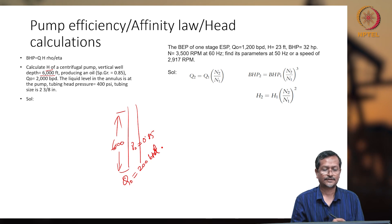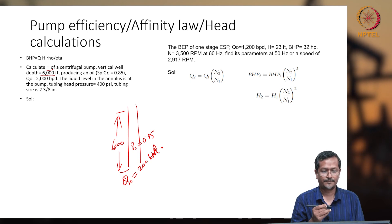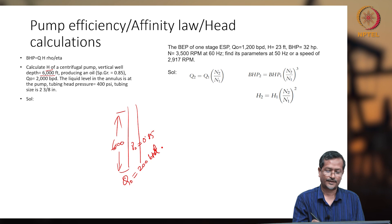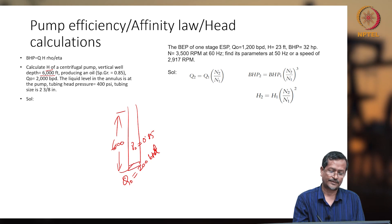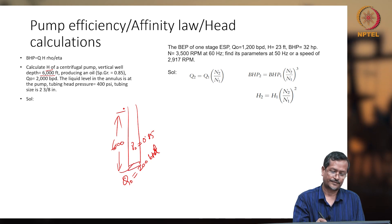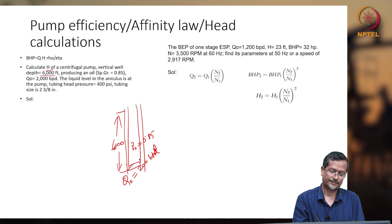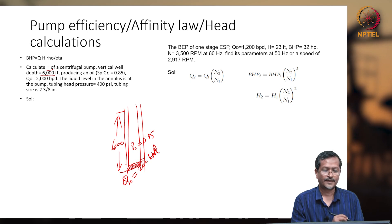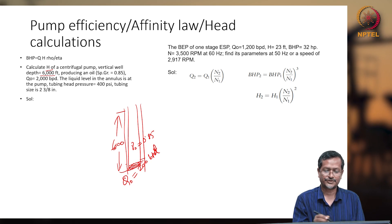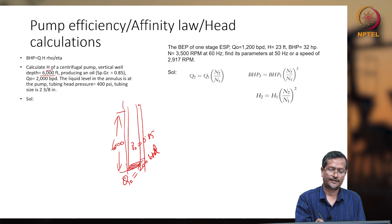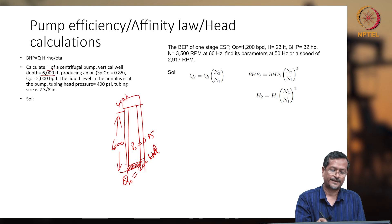The liquid level in the annulus is at the pump, so the pump is here and liquid level is also here. Tubing head pressure is 400 psi.